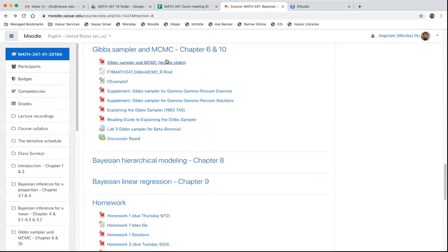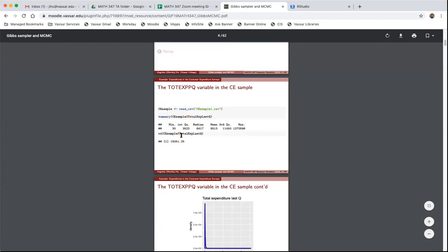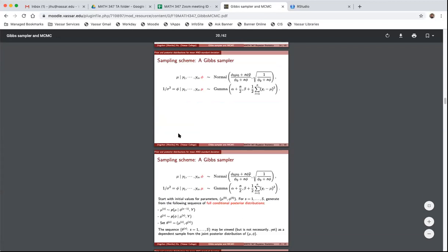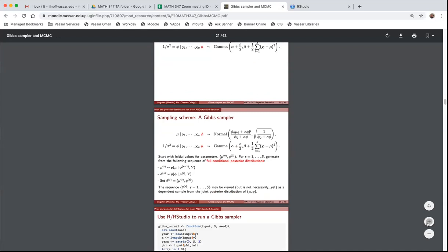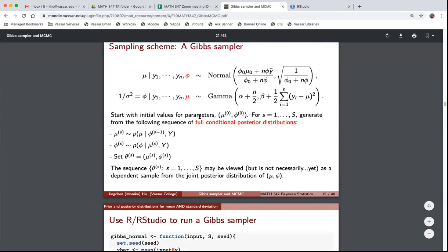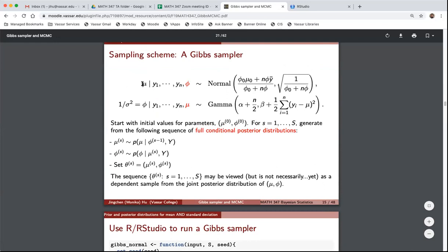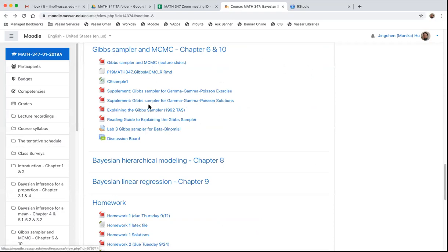So keep in mind this, and then if you come back to the lecture slides, when we're dealing with the normal case. So in the model that we covered in class, both mu and phi, they are parameters, but you also have the data, okay, y1 through yn. And what we derive is those full conditional posterior distributions of each parameter given everything else. So when we say everything else, it's the data and the parameters.